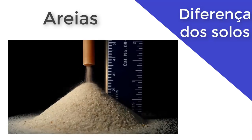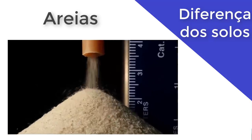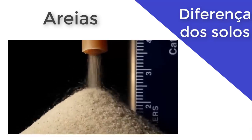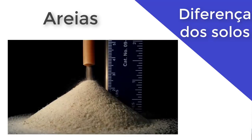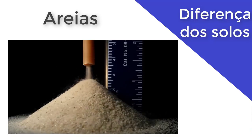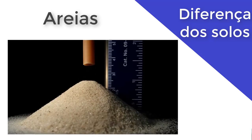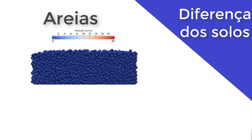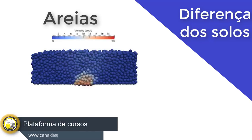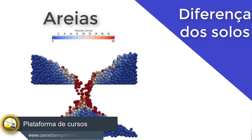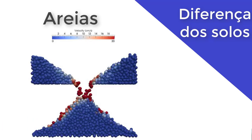Na hora que você pegar um torrão de solo argiloso, ele vai tender a ficar na sua mão, a não ser que esteja no estado líquido. Se ele estiver entre o estado sólido, semissólido ou plástico, vai ficar na sua mão por conta dessa ligação que a argila tem com as suas partículas. Já a areia não tem essa ligação — são grãos individuais que não têm nenhum tipo de ligação com os outros grãos, a não ser que entre esses grãos exista argila. Se for uma areia pura e simples, o grão é totalmente individual, sem nenhuma ligação com seus vizinhos.